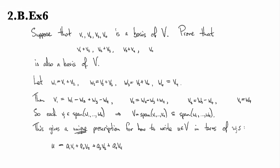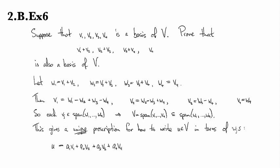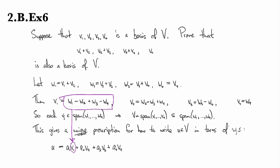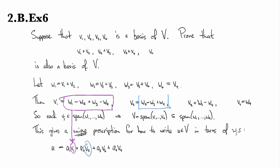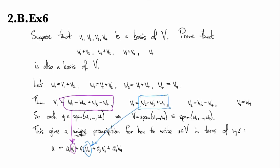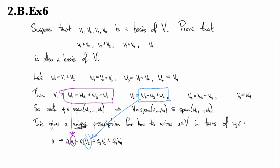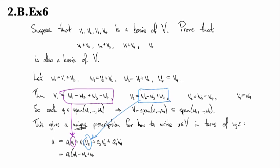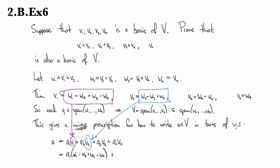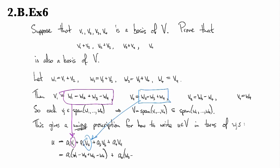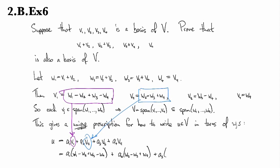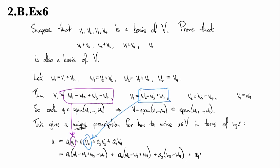Now what I can do is I can say, I'm going to take V1 here and replace it by exactly this quantity. And I'm going to take V2 here and replace it by this quantity, and so forth. And so that gives me A1 W1 minus W2 plus W3 minus W4 plus, and then A2, and I swap in for V2, W2 minus W3 plus W4, and A3, and I swap in for V3, W3 minus W4, and A4, and I swap in for V4, W4.